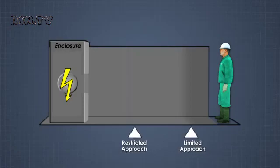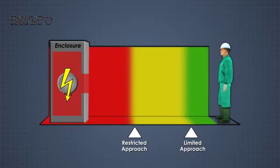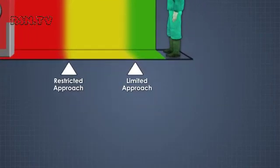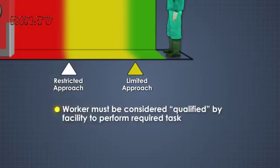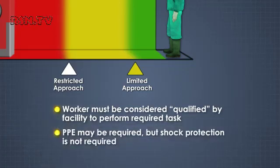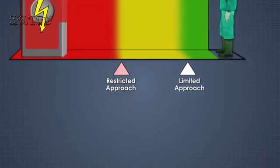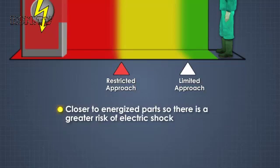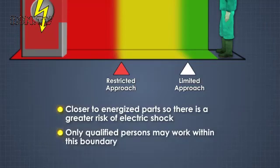Two boundaries in NFPA 70E define different levels of electric shock hazard danger around live electrical equipment. The distance of the boundaries from the equipment is calculated based on its voltage. The first is the limited approach boundary — to work within this boundary, a worker must be considered qualified by the facility to perform the required task. PPE may be required, but shock protection is not required. The second is the restricted approach boundary — this boundary is closer to energized parts, so there is a greater risk of electric shock. Only qualified persons may work within this boundary, and shock protection is required.